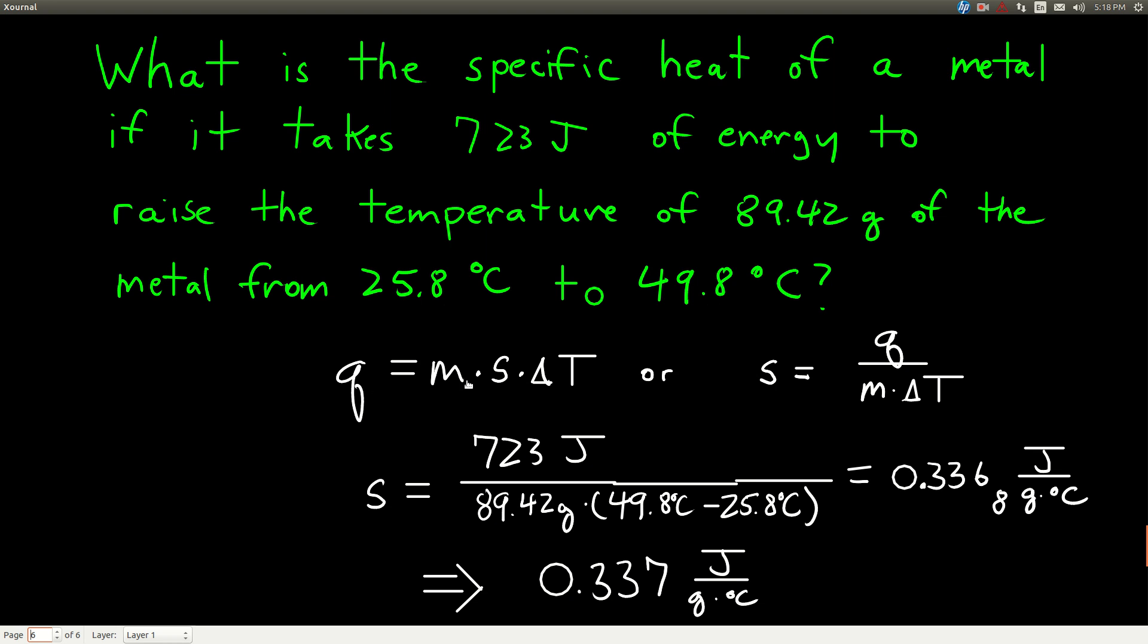If we plug in here, Q equals mass times specific heat times delta T. But now, because we want to find the specific heat capacity, we just rearrange this equation, cross-multiply, divide through by m times delta T. Make sure you guys see how I got this form of it right here: s is equal to Q over m times delta T. I just rearranged this.